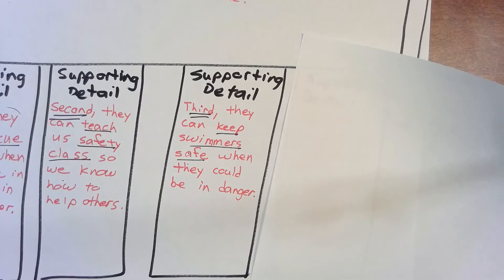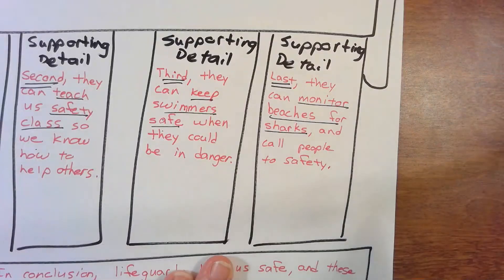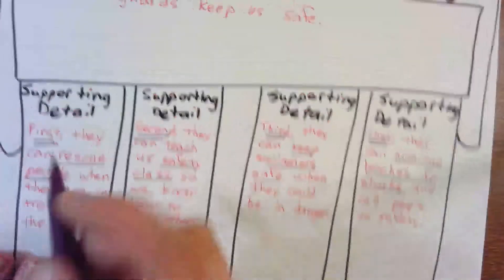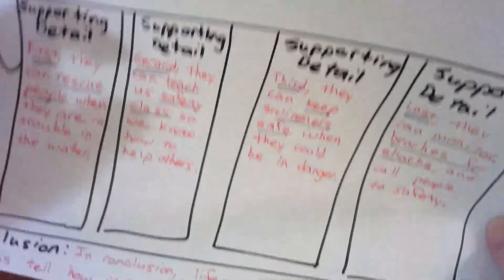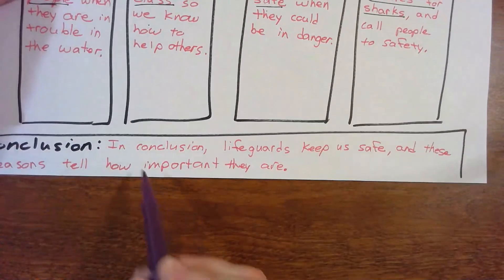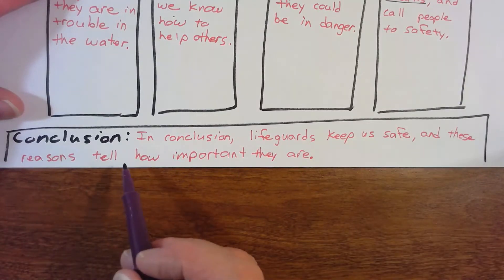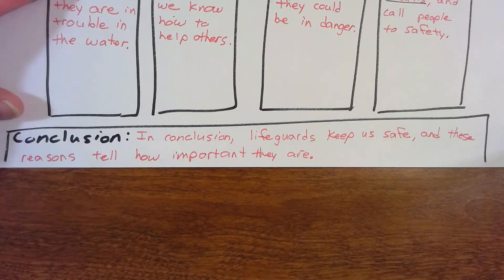You can use my sentence or come up with your own — just be creative. The last one says: 'Last, they can monitor beaches for sharks and call people to safety.' Our introduction says 'lifeguards keep us safe,' so our concluding sentence restates our main idea: 'In conclusion, lifeguards keep us safe, and these reasons — one, two, three, four — tell how important they are.'